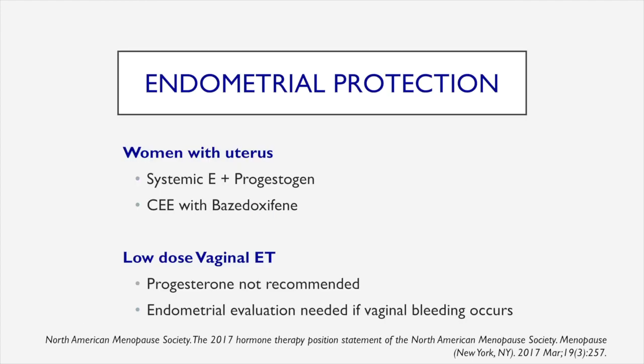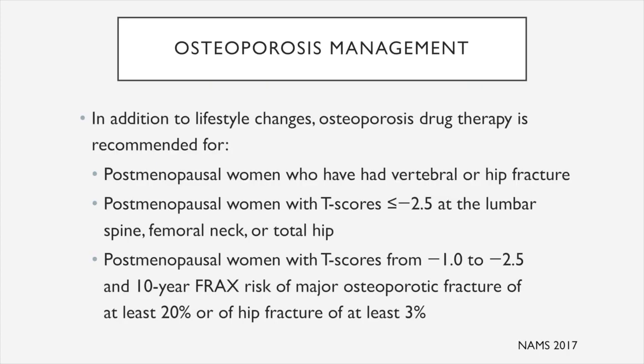To emphasize endometrial protection: we give systemic estrogen plus progesterone for women with a uterus. We can also give conjugated equine estrogen with bazedoxifene. For low-dose vaginal estrogen therapy, progesterone is not recommended. For osteoporosis management, in addition to lifestyle changes, drug therapy is recommended for postmenopausal women who have had vertebral or hip fracture, postmenopausal women with T-scores less than or equal to negative 2.5, and postmenopausal women with T-scores from negative 1 to negative 2.5 and a 10-year FRAX risk of major osteoporotic fracture of at least 20%, or of hip fracture of at least 3%.